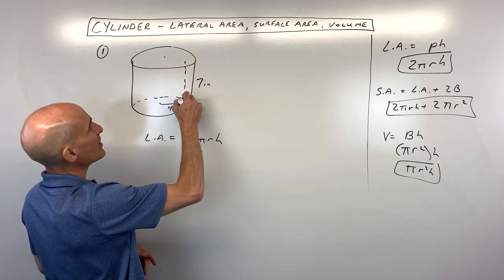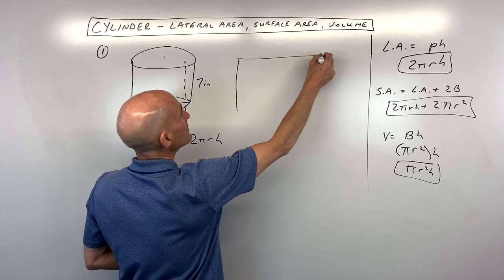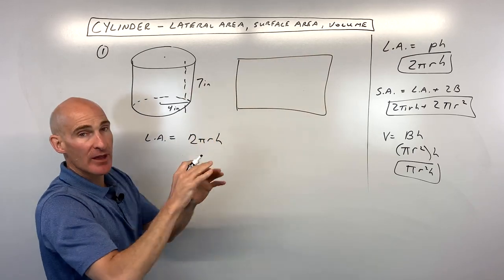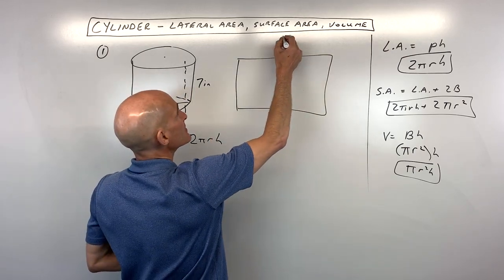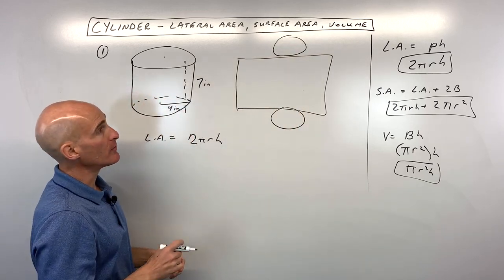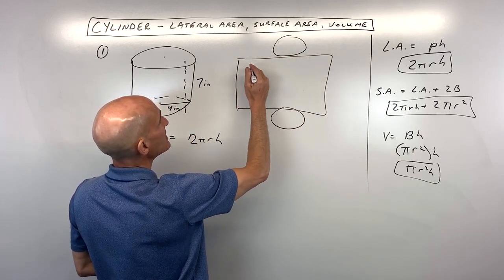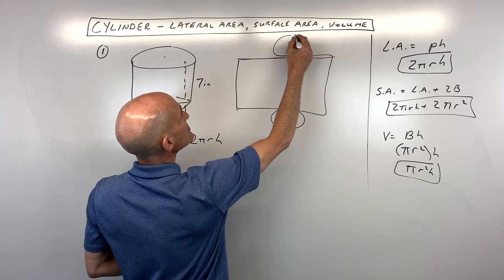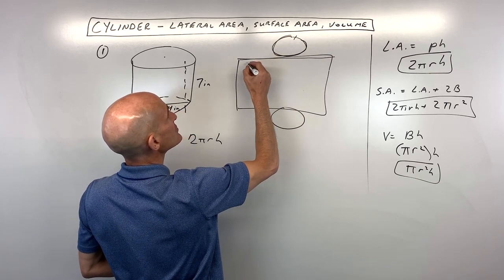Now keep in mind, if I was to cut this and unroll it, you would have like a rectangle that makes up the sides, and then at the top you'd have a circle, and the bottom you'd have a circle. But the lateral area is just the area of this rectangle.